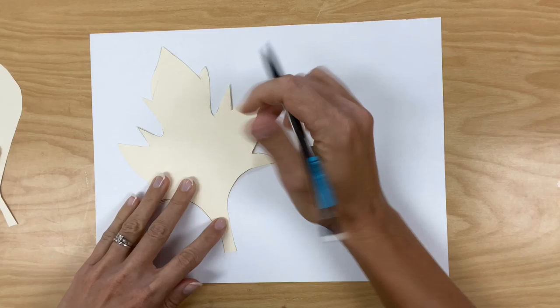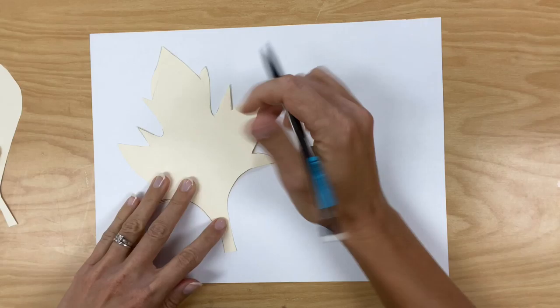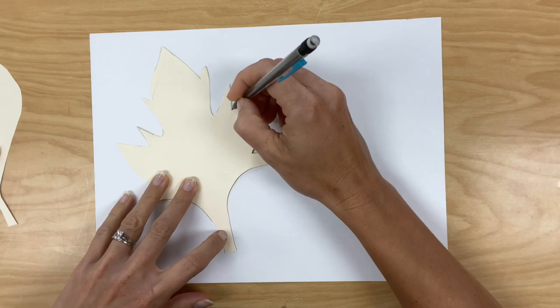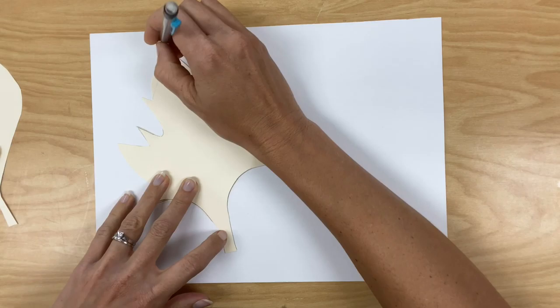You're going to need an eight and a half by eleven white piece of paper. This can be your sketchbook paper or any white paper that you have at home. You're going to turn it horizontally and then for my remote learners you're going to sketch two large leaves, trying to fill about half of your paper with one leaf and then the other half of your paper with another.